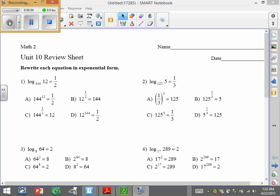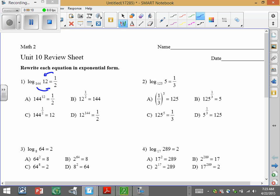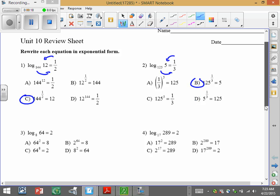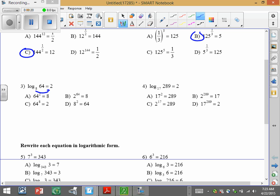Let's do a quick rundown on the review sheet for you guys that are interested. The first thing, just rewrite it in exponential form. Remember, you've got the spiral. So 144 to the 1 half equals 12, so number one is C. 125 to the 1 third equals 5, so that one's B. We have 8 squared equals 64, which is D. And then 17 squared equals 289, which is A.